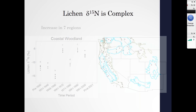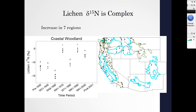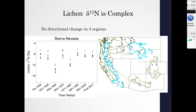The stable isotope composition of these lichens tells us about emission sources and shows a much more complex pattern than the nitrogen content did. Here we have the same time periods on the x-axis, but the nitrogen stable isotope composition on the y-axis. There's a less smooth trend, but an increase in stable isotope composition occurred in seven regions. In an additional four regions, we saw no significant change from our first time period to our last time period. And in one region for Letharia vulpina, we see a slight decrease from the first to the last time period.